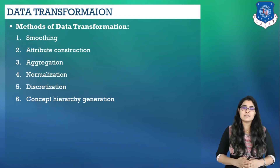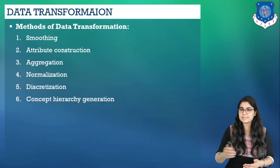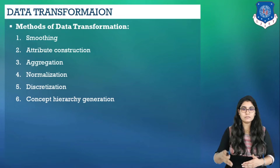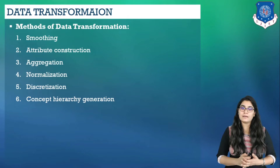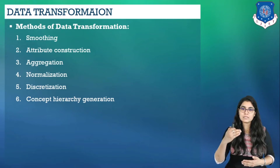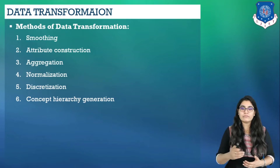Next is discretization, where the raw values of a numeric attribute like age are replaced by interval labels — for example, 0 to 10, 11 to 20, 21 to 30, and so on. We can also replace attribute values with conceptual labels like youth, adult, or senior for the attribute age. These labels can be recursively organized into higher-level concepts, resulting in a concept hierarchy for the numeric attribute. The last method is concept hierarchy generation for nominal data, where attributes such as street can be generalized to higher-level concepts like city or country. Many hierarchies for nominal attributes are implicit within the database schema and can be automatically defined at the schema definition level.